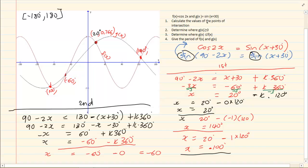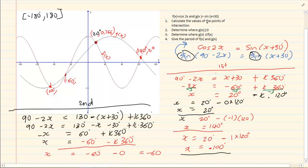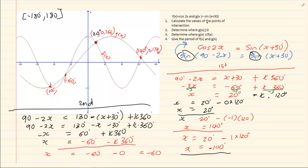Then looking at x = 140°: cos(280°) ≈ 0.174, giving the point (140°, 0.174). Read the question carefully — if they say round off to one decimal, round to one; if they say two, round to two. Many times they only want the x values, so you don't bother with y. If they want y values then you continue. Make sure you are answering the correct question.